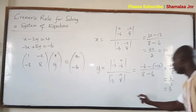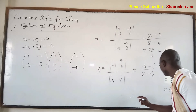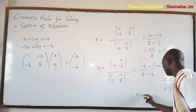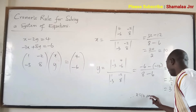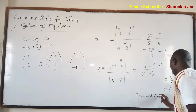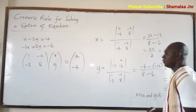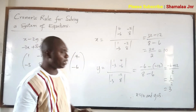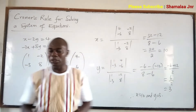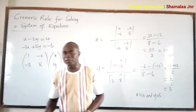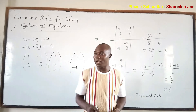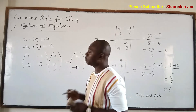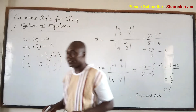So therefore x equals 10 and y equals 3. This is the solution to this system of equations. So viewers, this is how Cramer's rule is used to solve a system of equations.